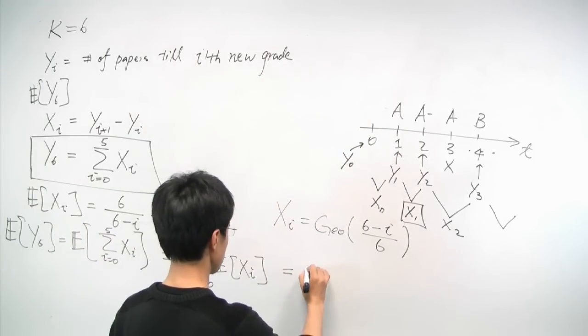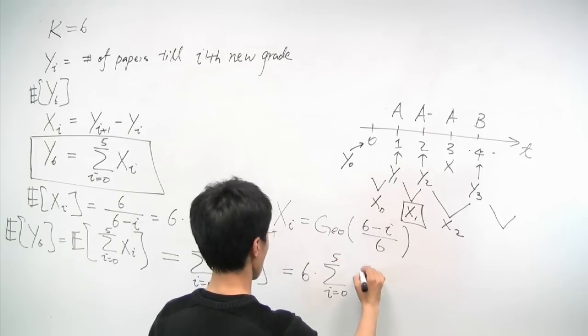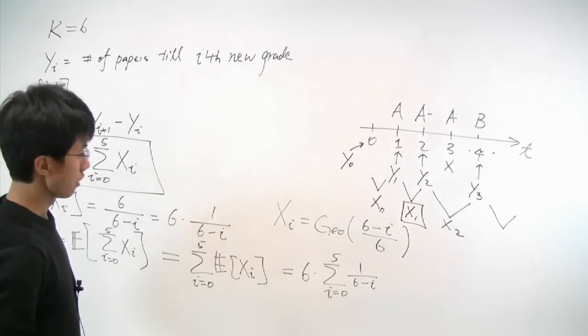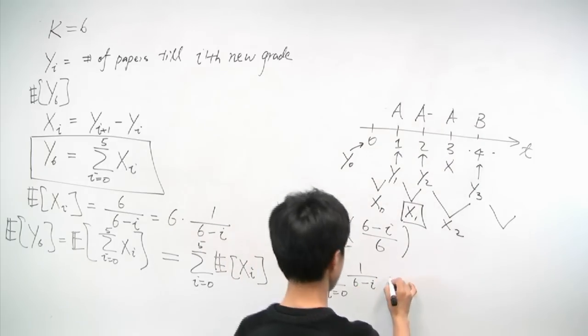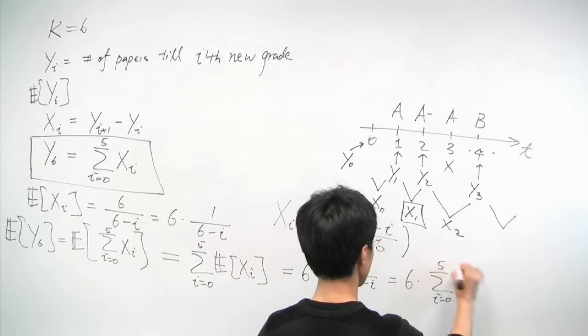Now, since we know that expected value of xi is the following expression, we see that this term is equal to 6 times the sum of i equals 0 to 5 of 1 over (6-i). Or written in the other way, this is equal to 6 times the sum of i equal to 1 to 6 of 1 over i.